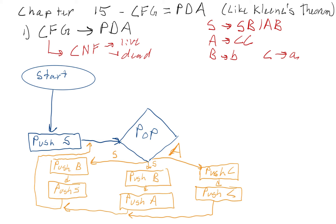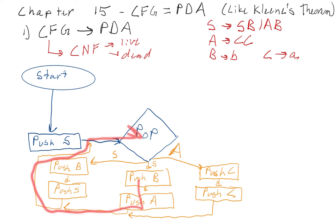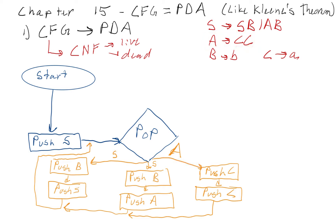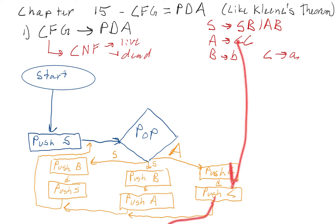Next, we pop the S off and replace it with B, A — again in backwards order — and then go back to the pop state. And then for the other live production, when we pop an A off, we push C, C. Since they're both the same you can't see that it's in backwards order, but the first C goes on first and the second C goes on top.